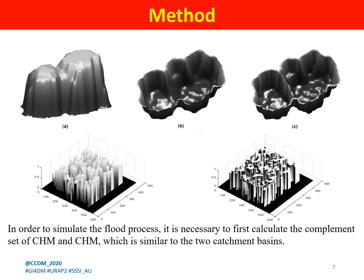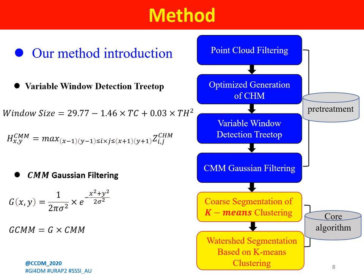The two pictures below are made from experimental data. The experimental process of this article is shown in the figure. First, predict the canopy size window. This experiment finds out the non-linear relationship between tree height and tree crown and gets the variable window size. Tc is the crown diameter of each individual tree; Th is the average tree height of individual single trees. Then the CHM model is generated. The CHM image is reconstructed based on point cloud operations, and the value of each grid unit is replaced with the maximum value of the point cloud in the neighborhood to obtain the maximum canopy model.